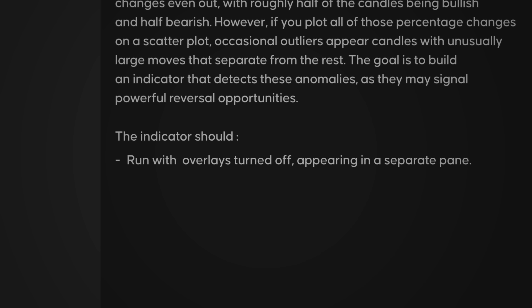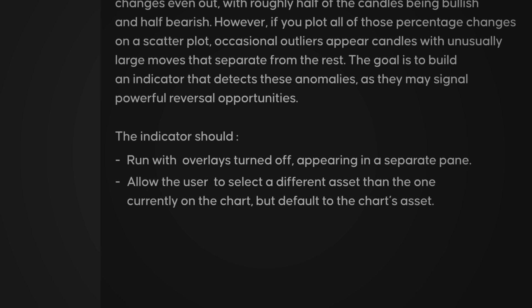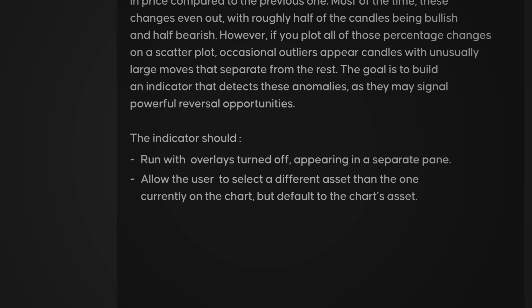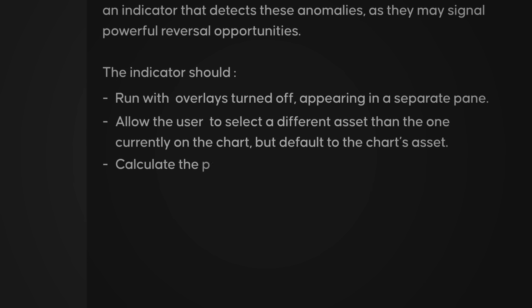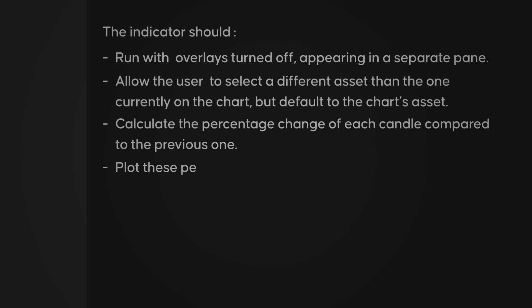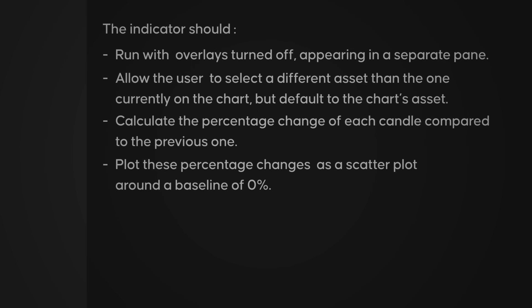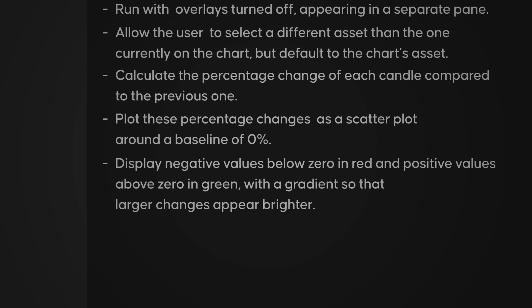After that, we'll give ChatGPT a few more key details about how the indicator should behave. First, we'll tell the AI that the indicator should allow us to select a different asset than the one currently on the chart, but by default it should use the asset we're viewing — this will allow us to detect divergences using other assets. Next, the scatter plot of percentage changes should be plotted around a baseline of 0%. Any negative values below 0 should appear in red, and any positive values above 0 should appear in green. To make it more visually meaningful, we'll also apply a gradient — the larger the change, the brighter the color.